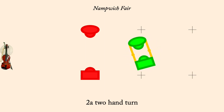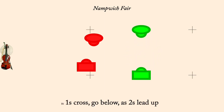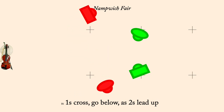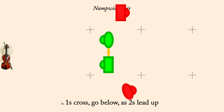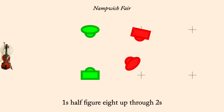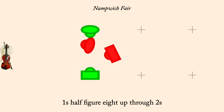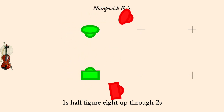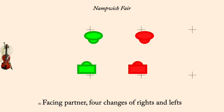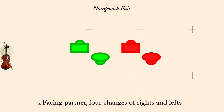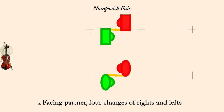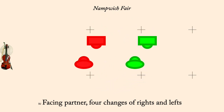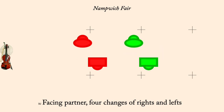One's cross go below as two's lead up. One's half-figure-eight up through twos. Four changes of rights and lefts. One's half-figure-eight up through twos.